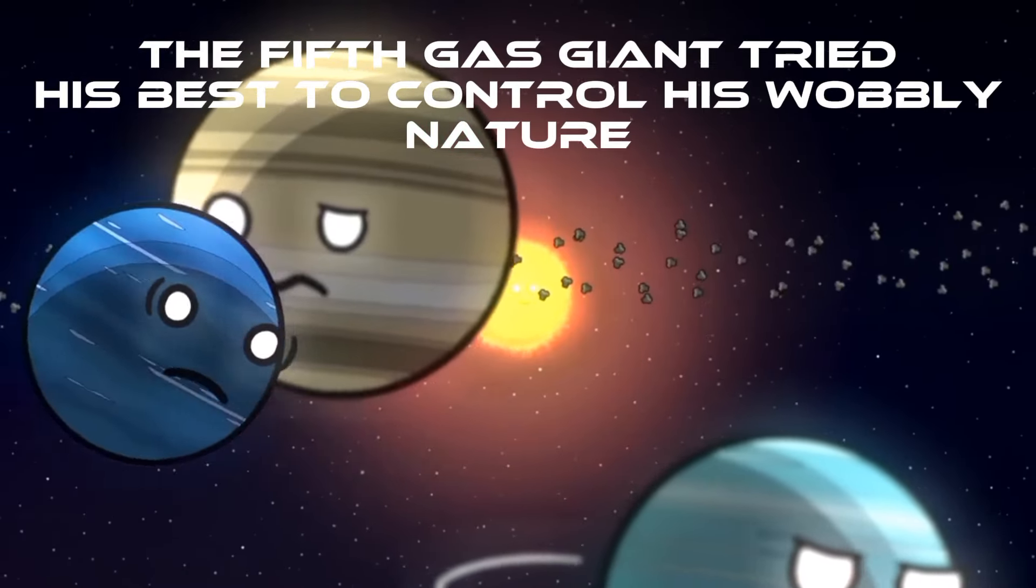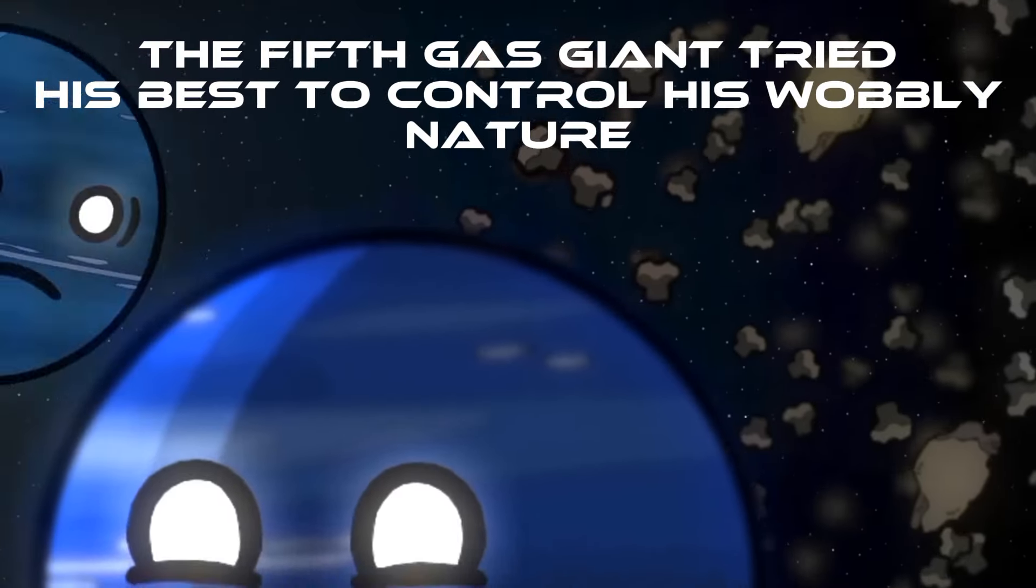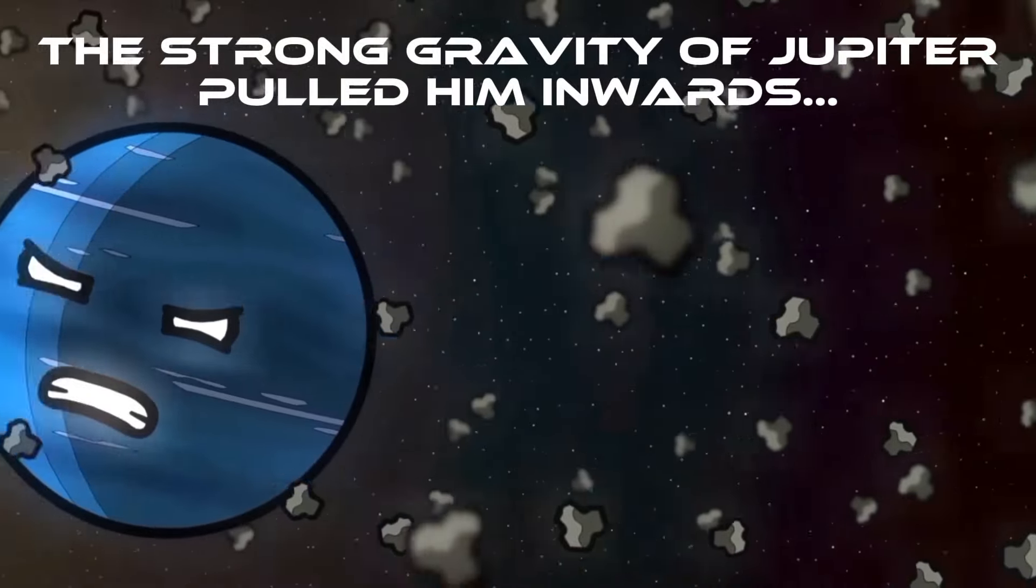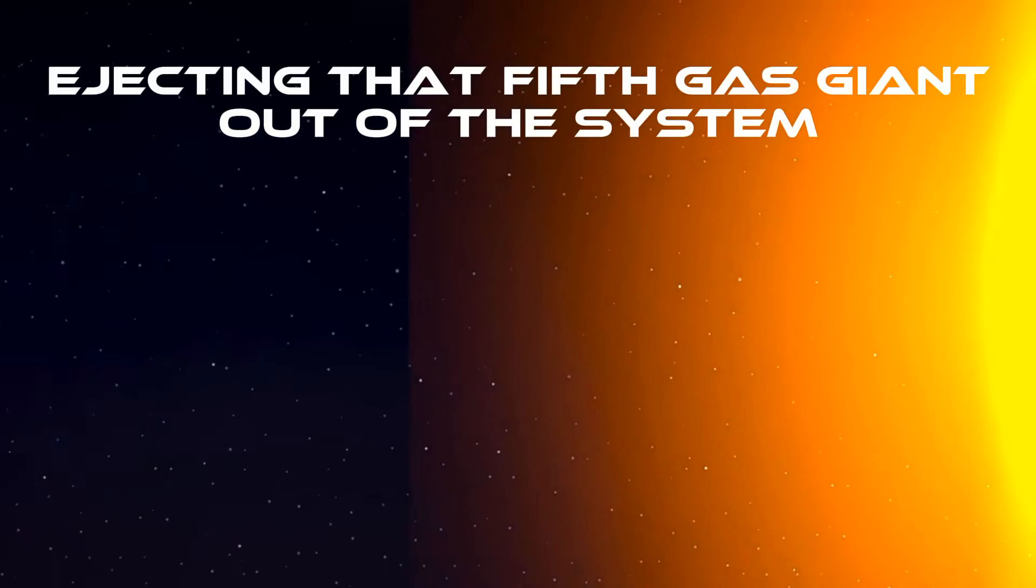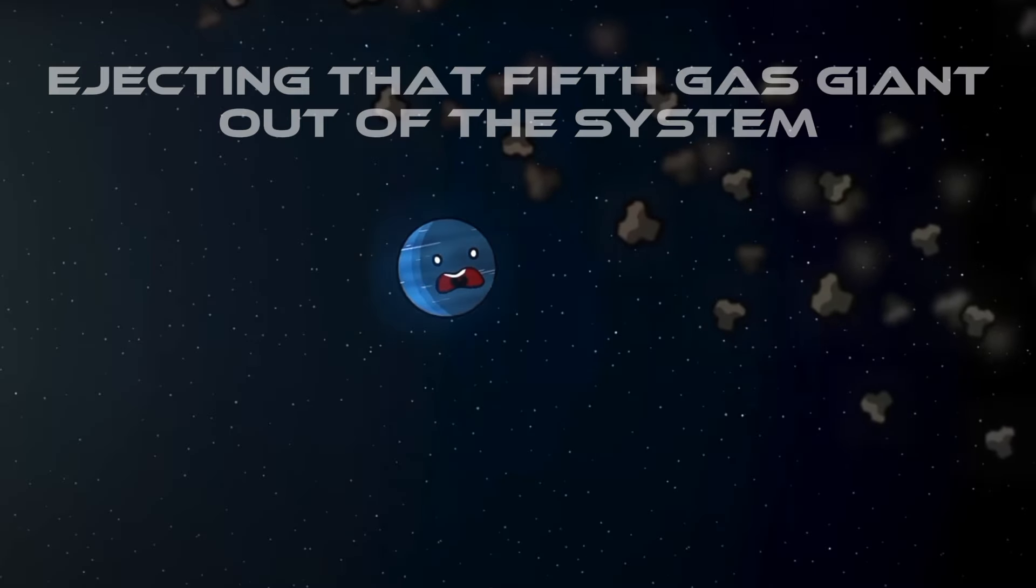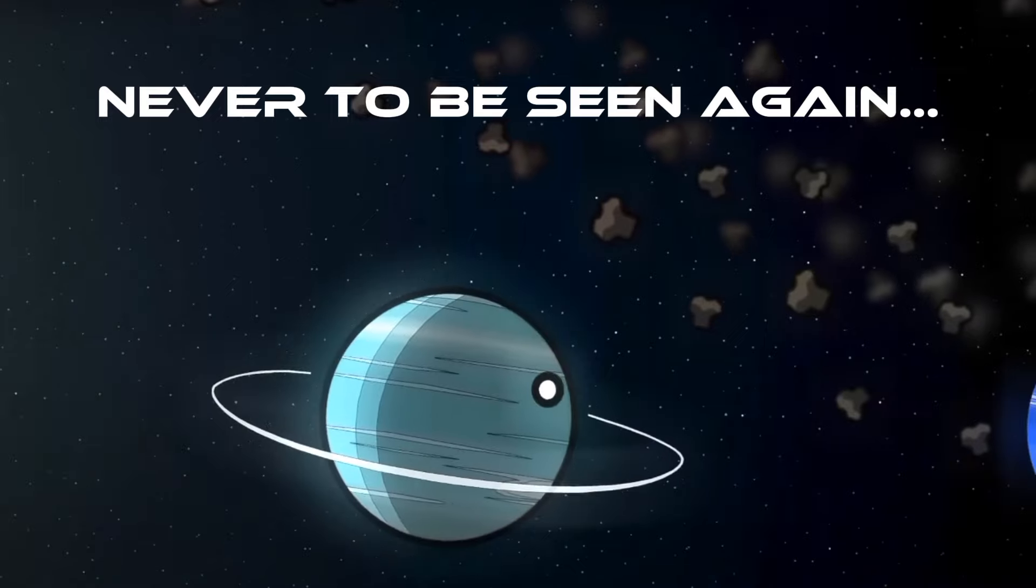the fifth gas giant tried his best to control his wobbly nature. The strong gravity of Jupiter pulled him inwards. The sun deliberately jerked forward, ejecting that fifth gas giant out of the system, never to be seen again.